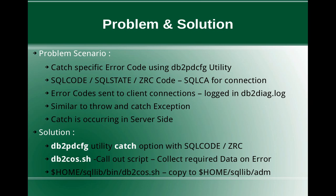Whatever activity is done, if some error occurs, these error codes are sent to the client connections and also logged in the db2diag.log. The functionality we are talking about here is something similar to throw and catch exception. When you submit some activity to the database and some error occurs, you can catch that as an exception in the application program and handle it on the application side. What we are discussing here is catching the exception on the server side.